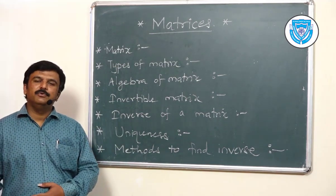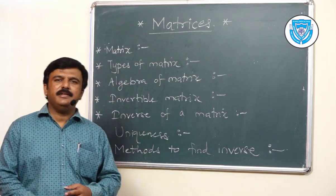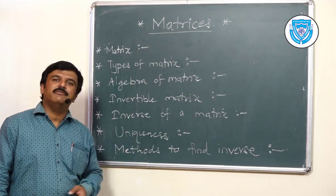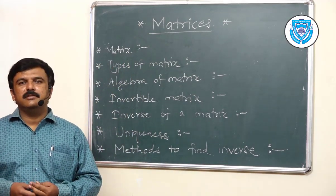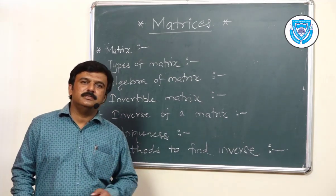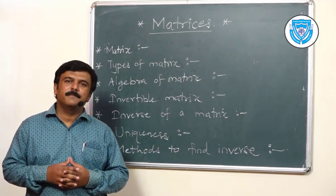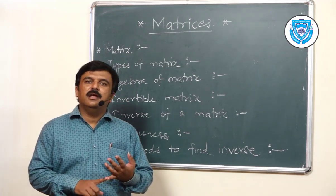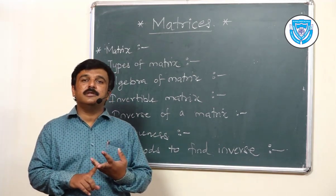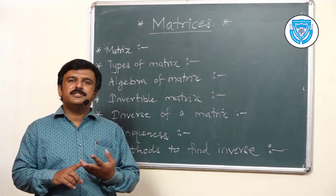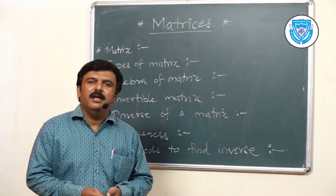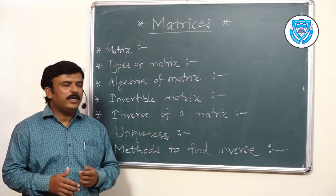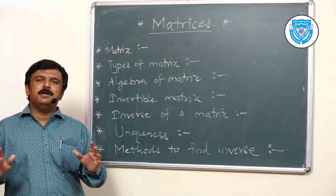Today I am going to start with mathematics paper one. The topic we are starting with is already connected with class 11. We are going to start with matrices. The definition of matrix is very simple — it is a rectangular arrangement of numbers in rows and columns enclosed in a square bracket. Matrix is useful in almost all branches of science, statistics, atomic physics, and subjects like operations research.